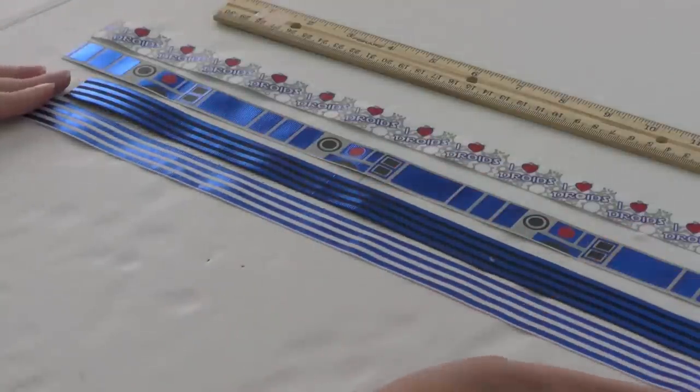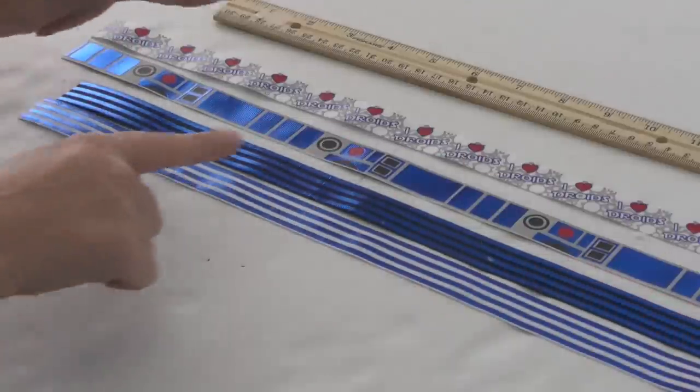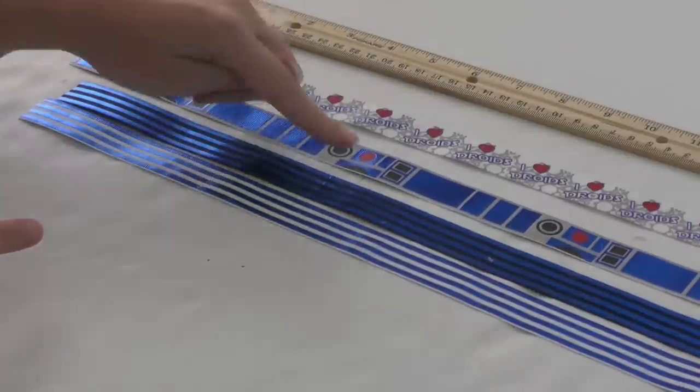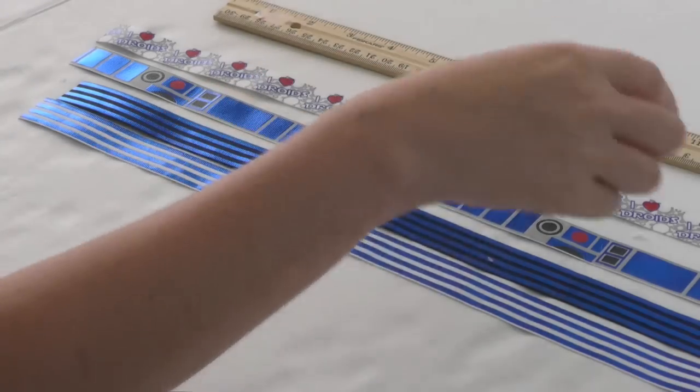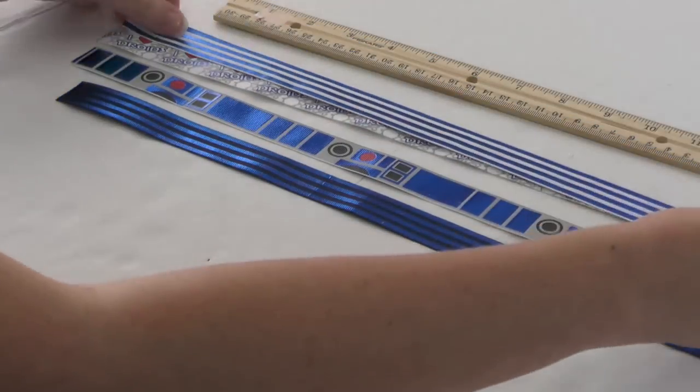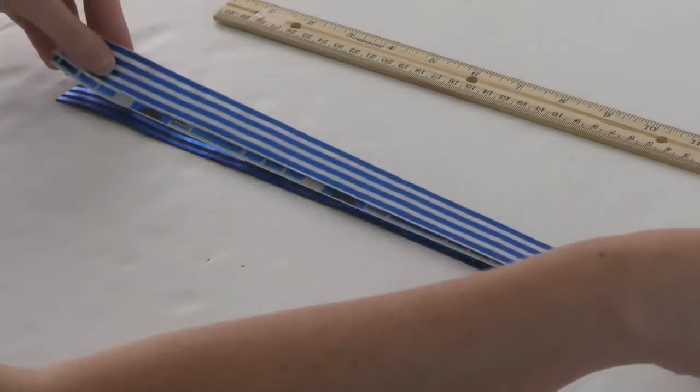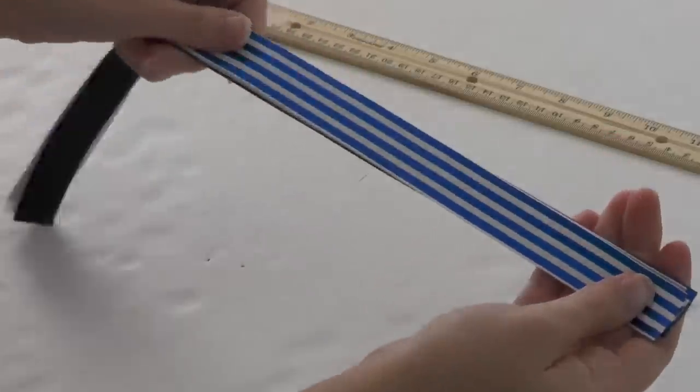All right, so here are the prints - the 'I love droids', the droid, the actual droid, and then the two stripes. You're just going to layer these one on top of the other. So I want my 'I love droids' and the droid print in the middle, and I'm going to have these stripes one on the top and one on the bottom. I'm just going to layer them like this, just sandwich them all together.